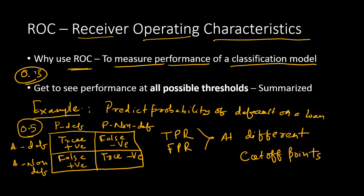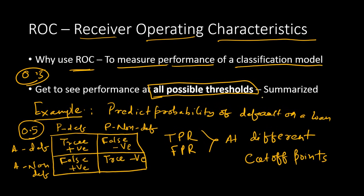The cutoff used for a healthcare industry model will be different from a cutoff used in the financial services industry or any other industry. Based on the domain of the problem, the cutoff could differ, so taking a standard cutoff is not very good. ROC has the feature of taking all possible thresholds — that is the important point to remember. It is a metric which takes into account all possible thresholds or cutoff points and measures performance results in a summarized fashion.